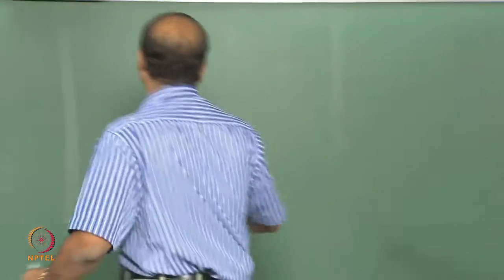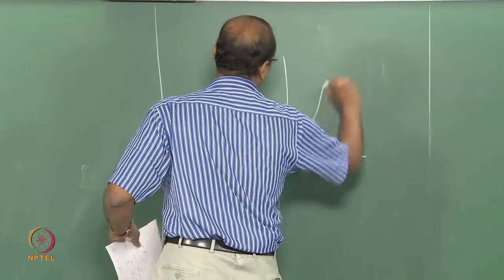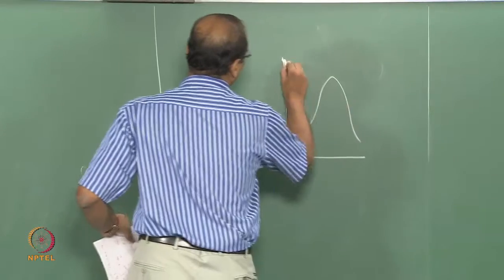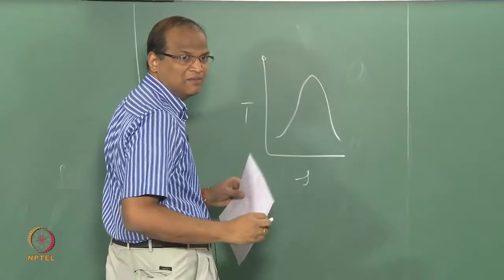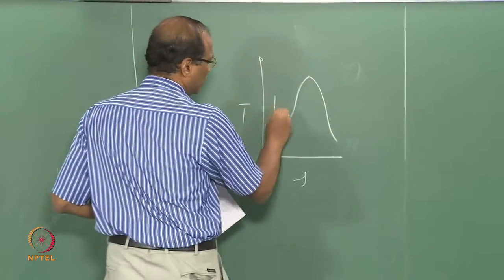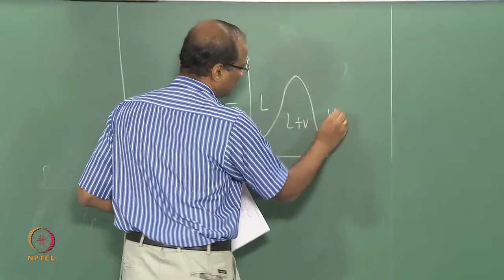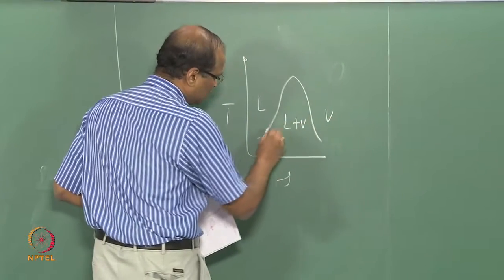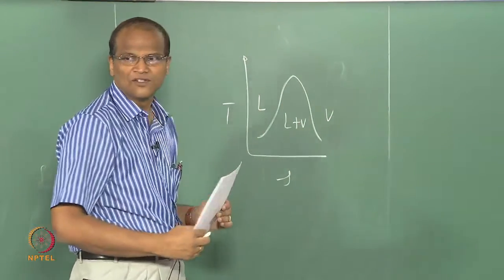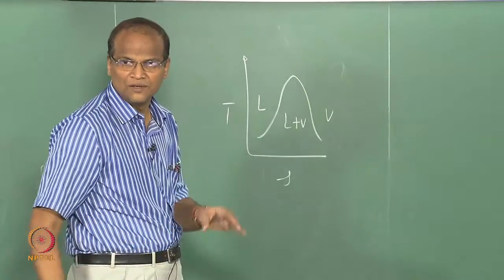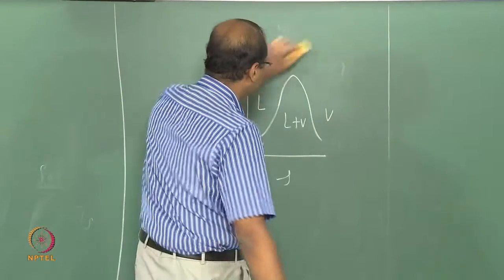What is it actually? Your T-S diagram of steam shows liquid plus vapor and vapor regions. How do you get this curve? It is basically coming from the Clausius-Clapeyron equation. So that is the program.